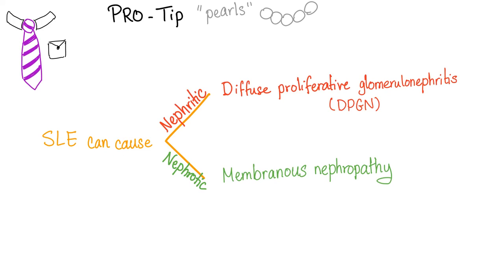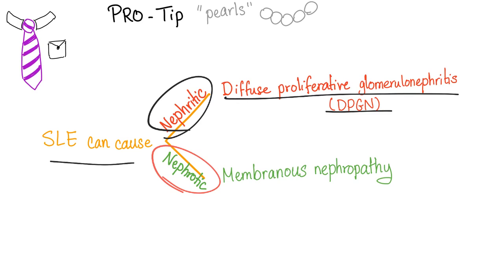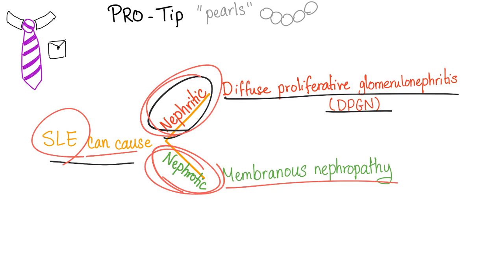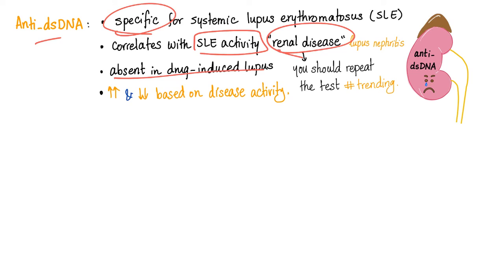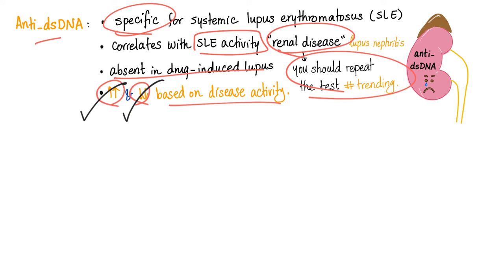Some pearls: systemic lupus erythematosus can damage the kidney in several ways — it can lead to nephritic syndrome such as diffuse proliferative glomerulonephritis, or nephrotic syndrome such as membranous nephropathy. Quick summary of anti-double-stranded DNA: very specific for SLE but not very sensitive; correlates with lupus activity especially nephritis and vasculitis; absent in drug-induced lupus; increases during flares and decreases with treatment.